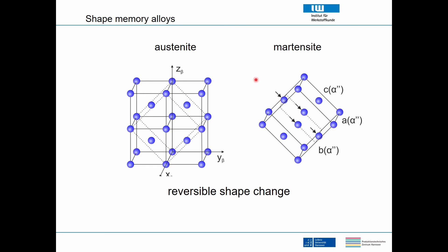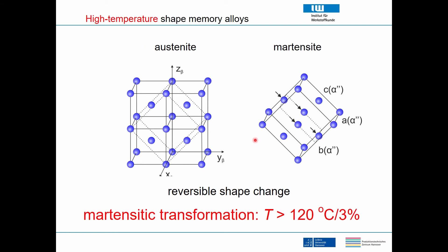Everybody in the audience is likely aware of the basic ideas of shape memory, where we have a structural change from a phase called austenite to martensite. It is this crystallographic reversible change that gives us the shape memory effect. High temperature shape memory alloys are defined by the martensitic transformation occurring beyond 120 degrees C with around three percent reversible strain.